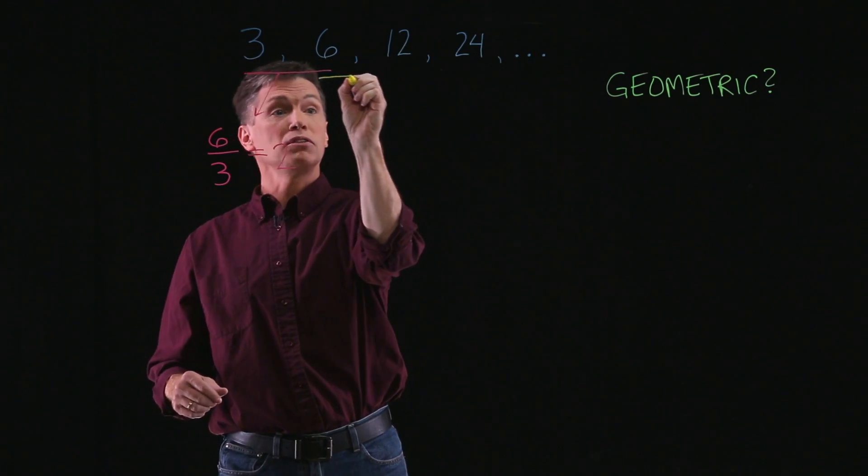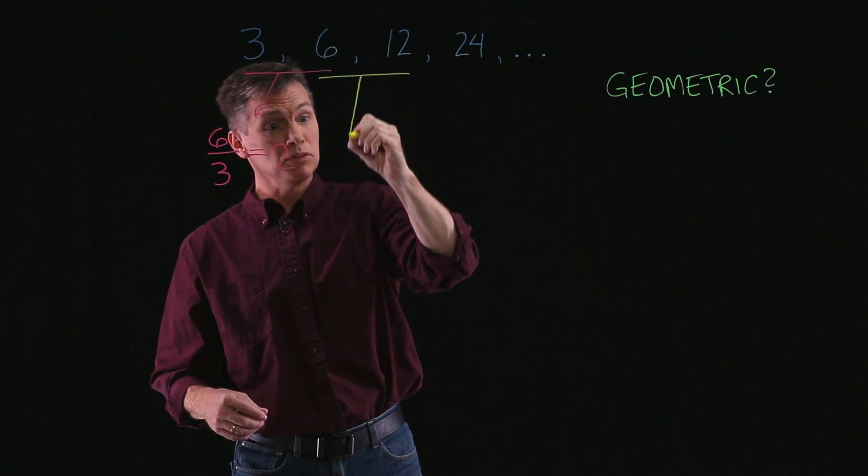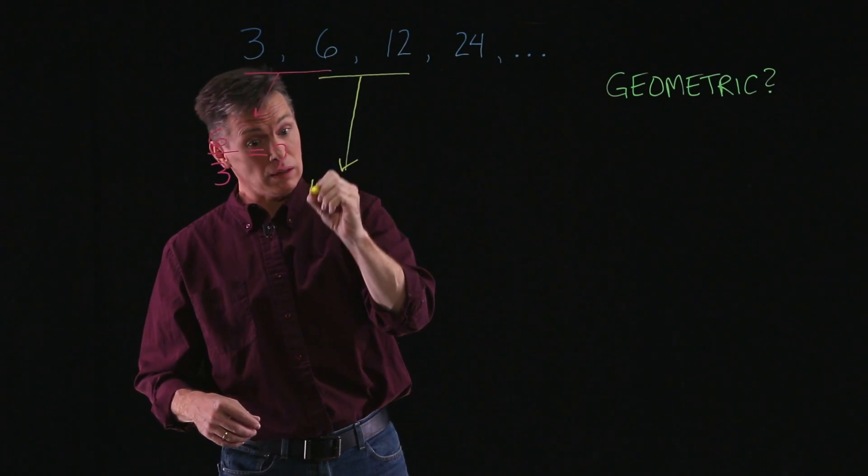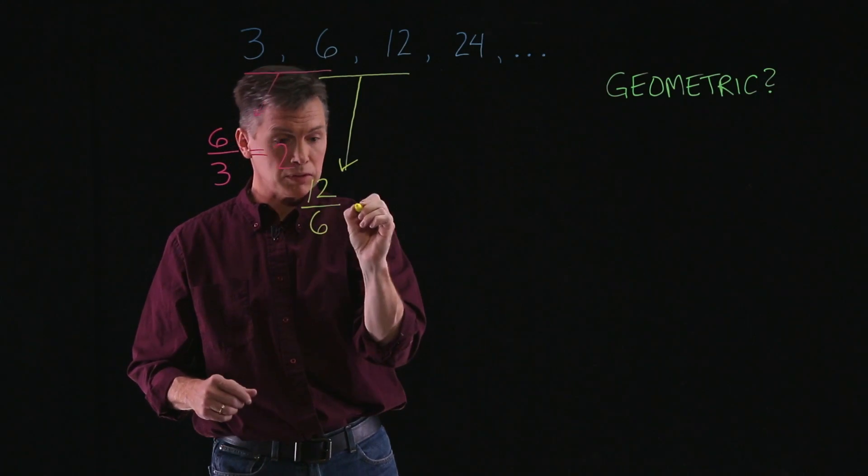Now what you need to do is go to another pairing of terms. So let's grab the second and the third. In this case, the 6 and the 12. And again, the later, which is 12, divided by the earlier, 6.